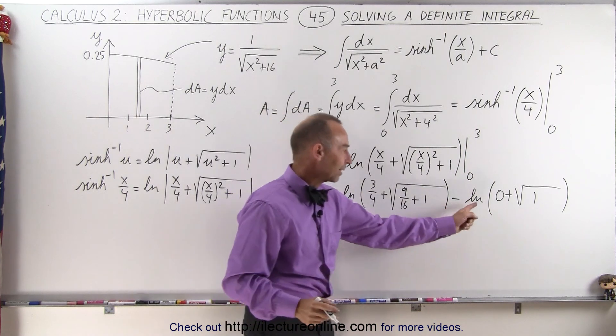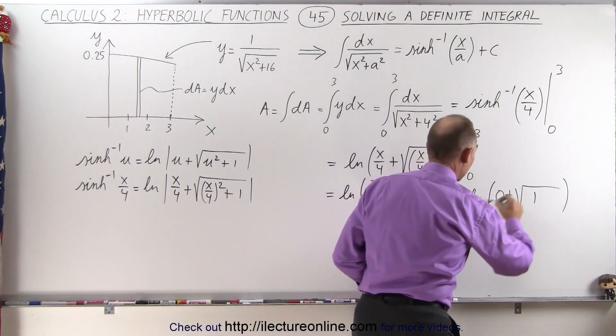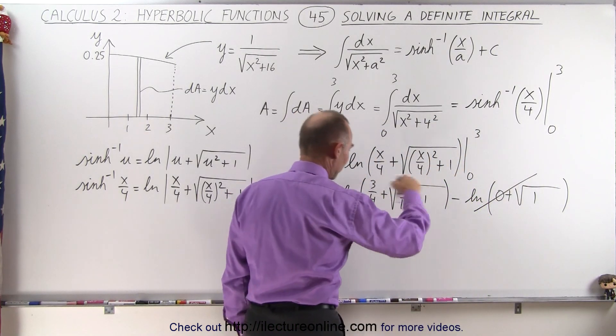So that means we get here, we get the natural log of 1 and the natural log of 1 is 0, so this simply drops off.